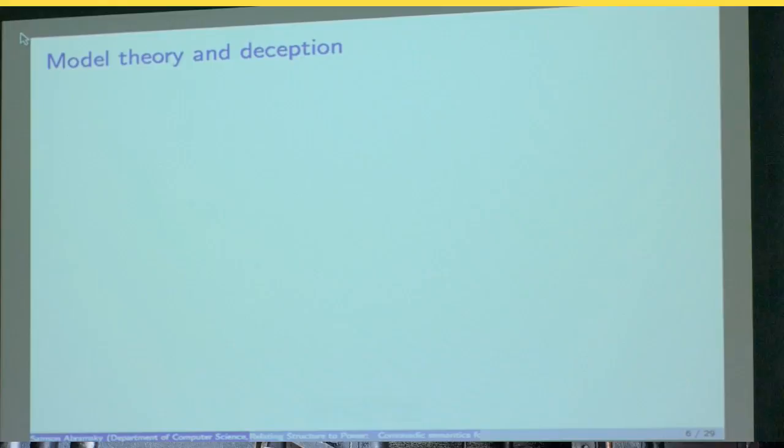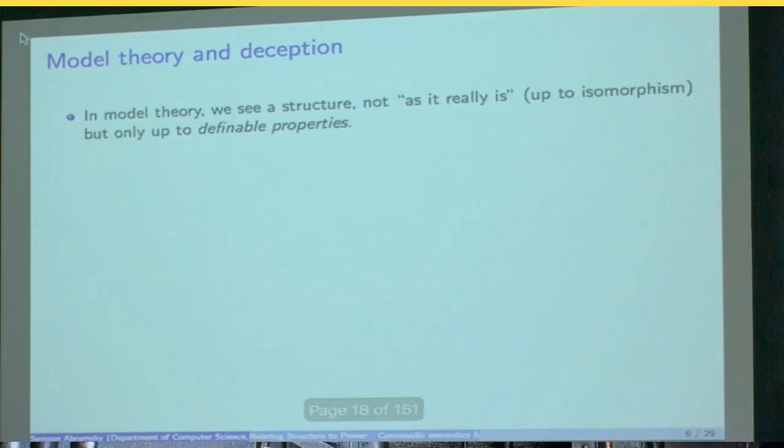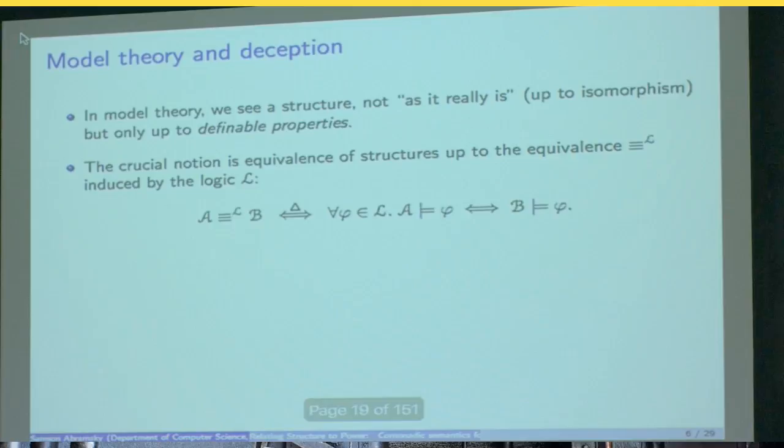So now we come on to model theory. Now I like to mildly tease model theory friends by saying model theory is about deception. In what sense? In model theory we see a structure, and by now, from now on by structure I mean relational structure of the kind we were just describing. So we see structure not as it really is, in other words, up to isomorphism, but only up to definable properties. And what is definable means? Well, it's obviously relative to a language, a logical language, in which you make the definition.